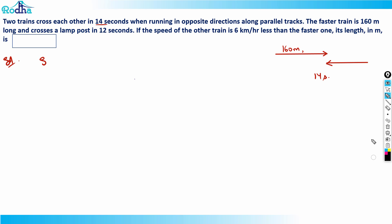Since the lamp post's width is negligible, the faster train just needs to cover its own 160-meter length to completely pass the lamp post. It does this in 12 seconds, so we can find the speed of the train from here.